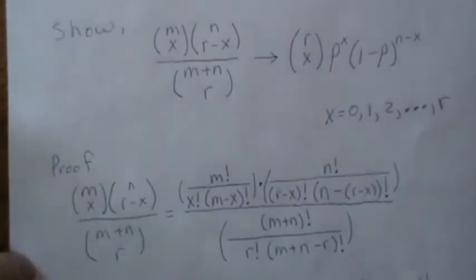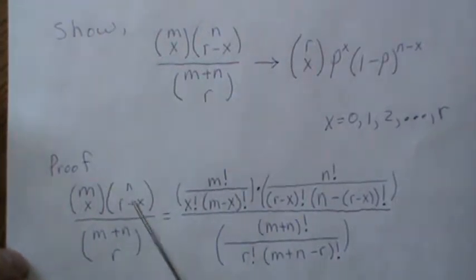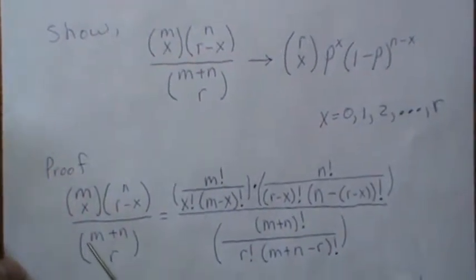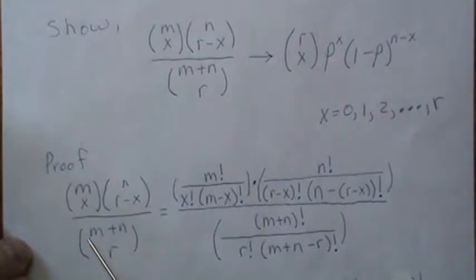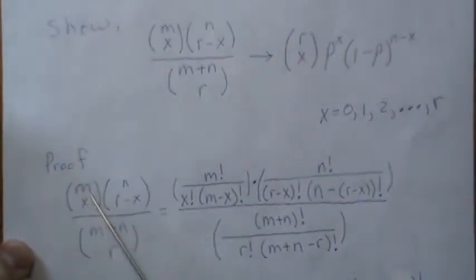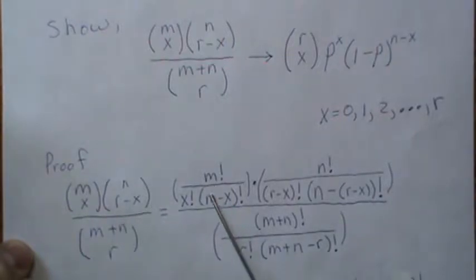Okay, so the proof is this. Let's look at this right here and expand all these combinations into their appropriate formulas. This is m choose x, which is this, n choose r minus x, etc.